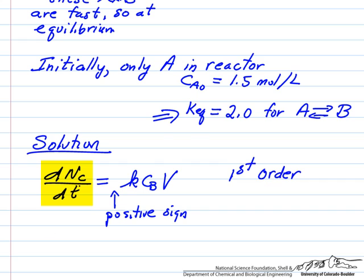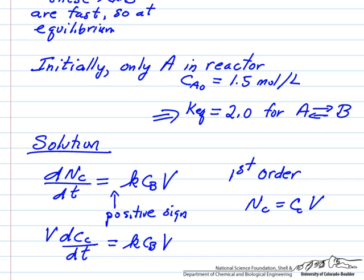Now N sub C is the number of moles of C in the reaction. N sub C is the concentration of C times the volume, which means we can write this derivative as the volume times the concentration of C equals k concentration of B times the volume.